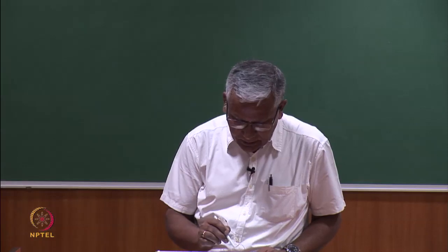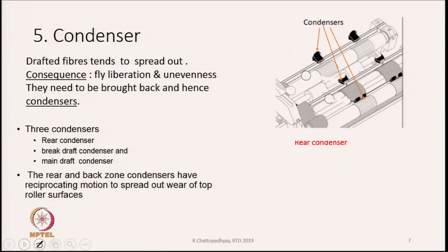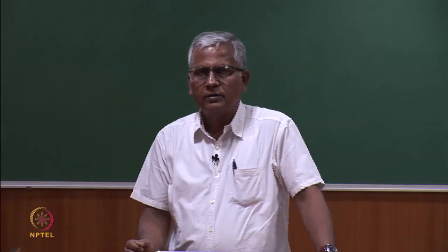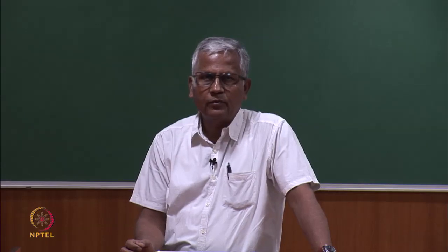There are three condensers: a rear condenser, a break draft condenser, and a main draft condenser. As shown in the diagram, the entry condenser is larger since sliver enters there; then a middle zone condenser; then another at the front. The rear and back zone condensers have a reciprocating motion to spread out the wear on the top roller surfaces.